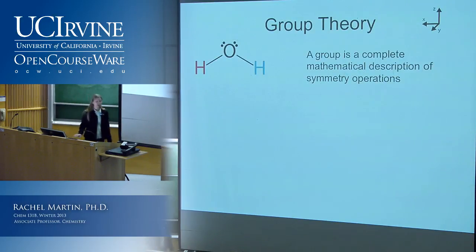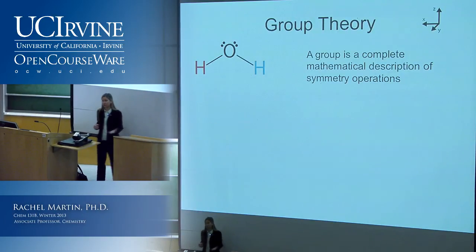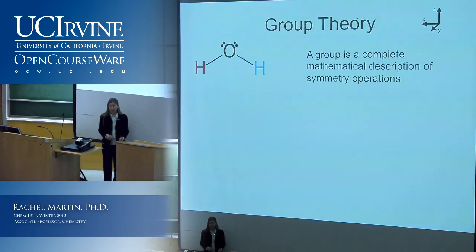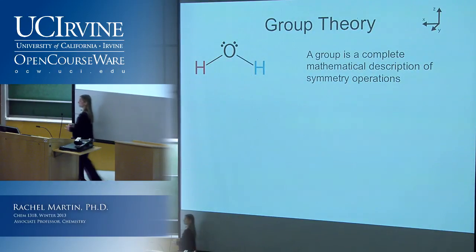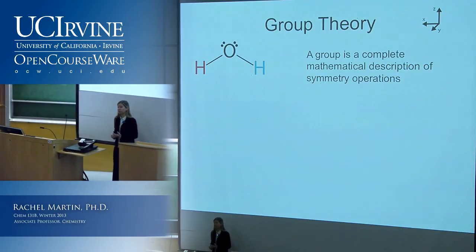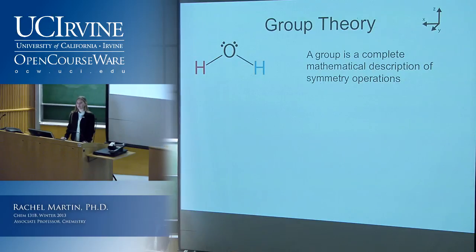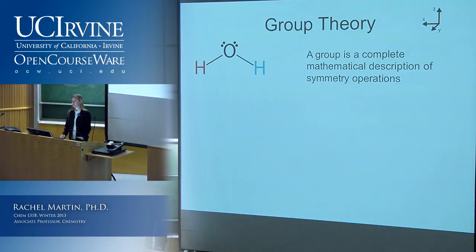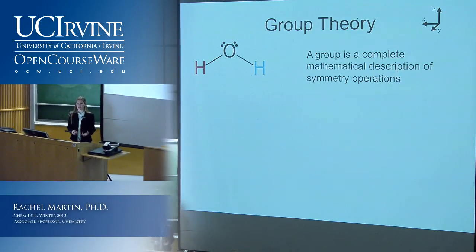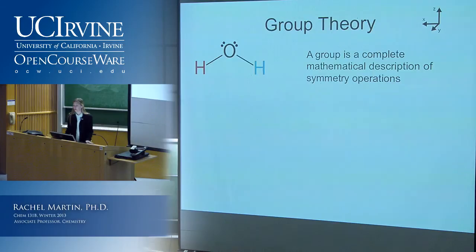So we're going to go in and talk about group theory, and today is going to be cool because we're going to learn how to take the two skills that we've learned so far and put them together to do something useful. So far we've learned how to put molecules — and actually any kind of different shapes — into point groups, and we also learned how to set up transformation matrices. Now we're going to see how this actually has an application in chemistry. The first application we're going to do is to chemical bonding. I like to do these examples because the answer you get is something that you all already know from general chemistry, so it's really easy to check your work.